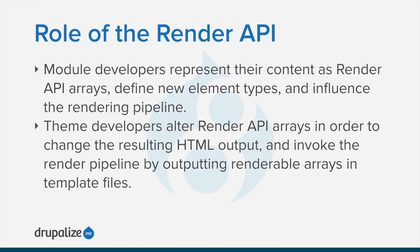With all of that in mind, it makes sense to establish the role that the render API plays and how that changes depending on what you're doing — specifically, whether you're writing a module or creating a theme. Module developers should make sure they always represent their content as render API arrays. They can define new element types to bundle up complex functionality as needed, and they can influence the rendering pipeline. Theme developers generally alter existing render API arrays to change the resulting HTML output. They also occasionally create new renderable structures in the context of preprocess functions. Theme developers also invoke the render pipeline by outputting renderable arrays in template files, in which case Twig will automatically start the process of converting the array into its HTML representation.